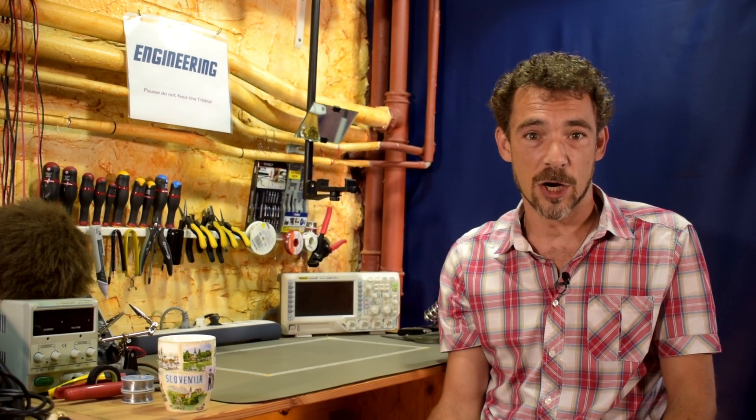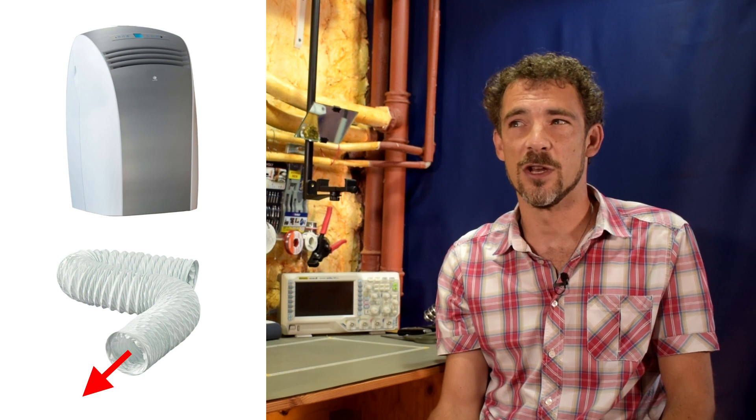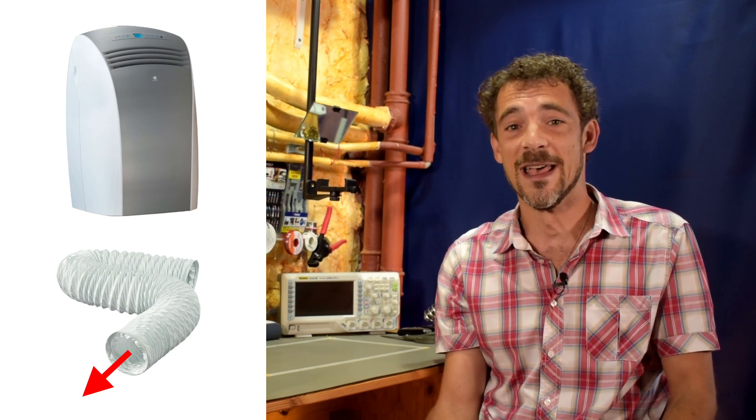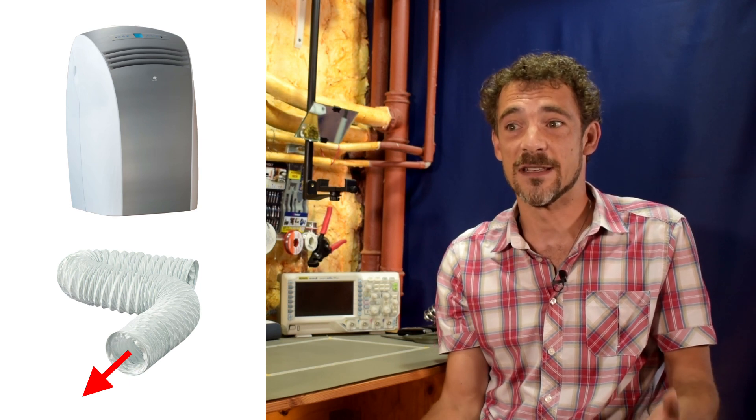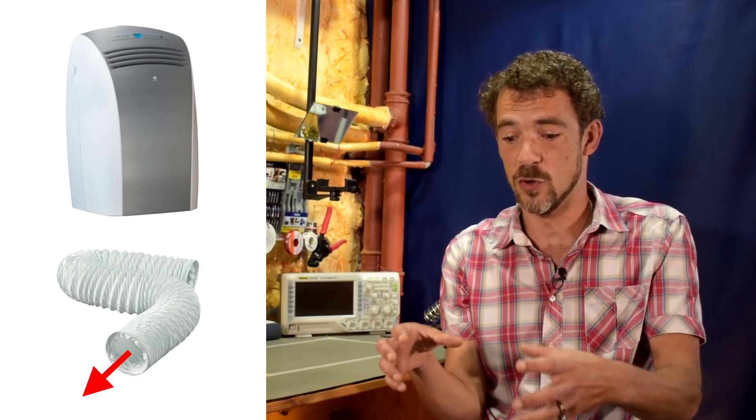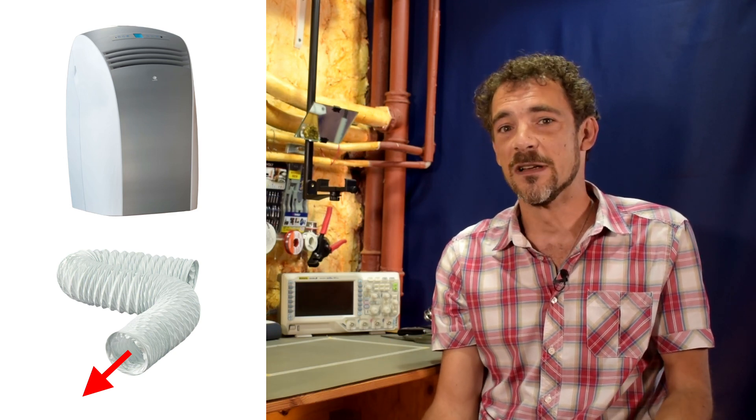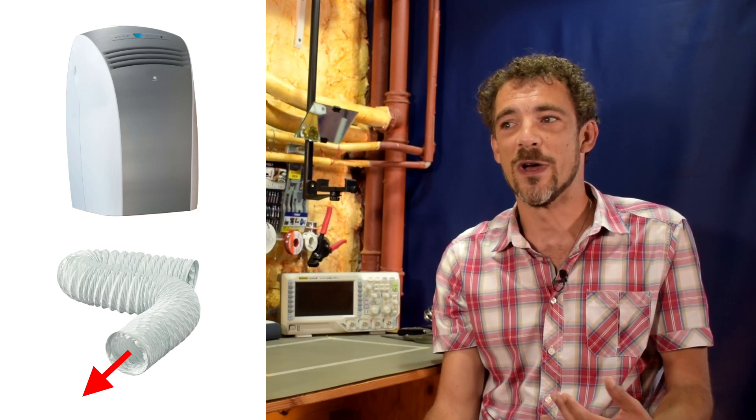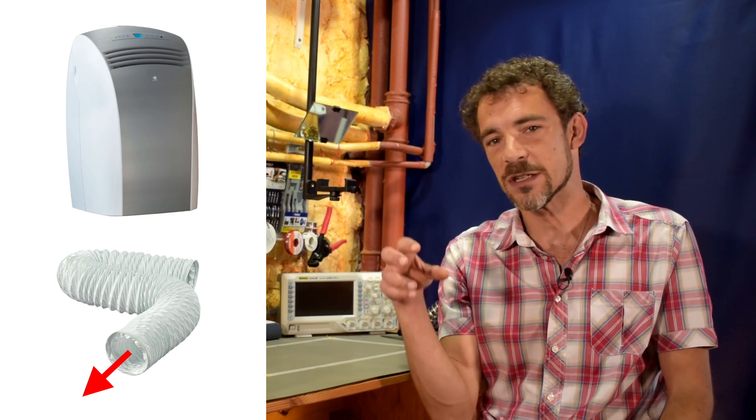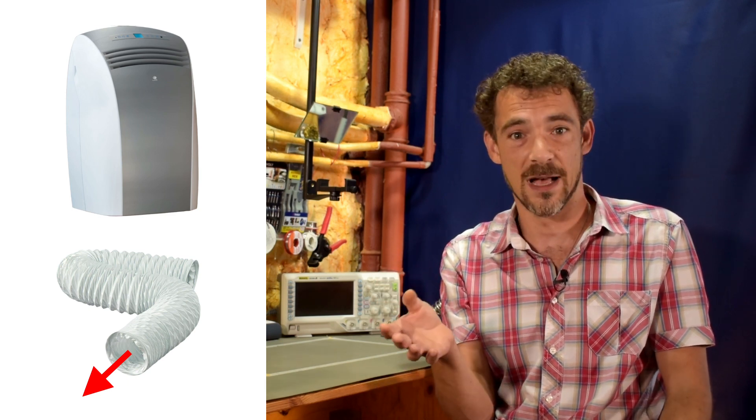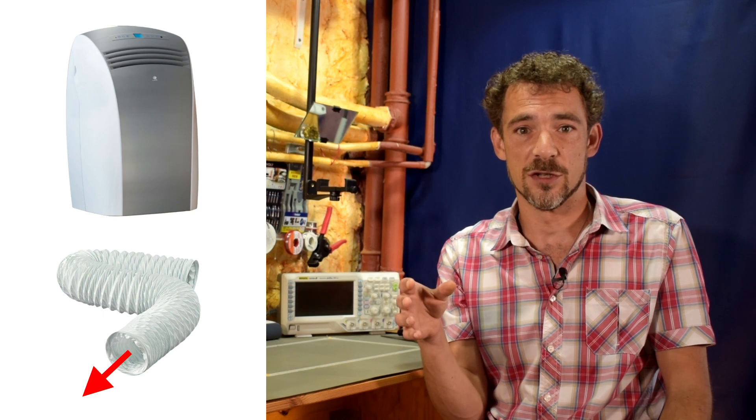And the third type is the so-called monoblock air conditioner, which is more popular in Europe and many other countries. This one is a little bit different. It's the same exact concept, except it's kind of all stuffed into usually an upright unit on wheels. This one is a little bit different because what it does is it actually sucks air in from the room, hot air. And of course it cools it as usual.